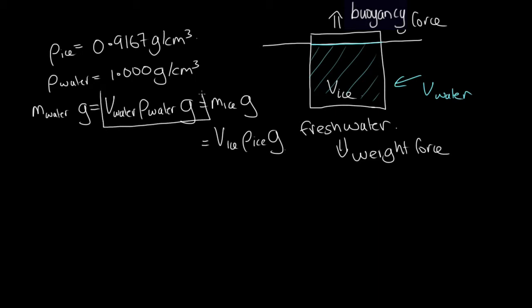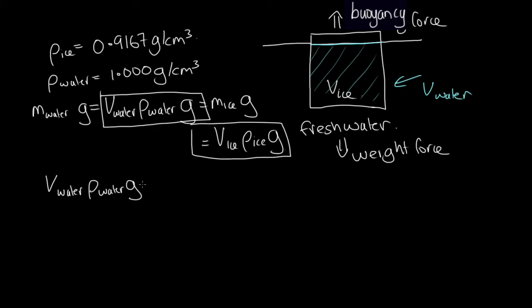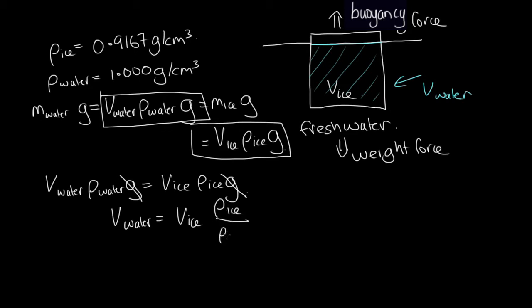So now what we want to equate is the buoyancy force and the weight force. We've got that the volume of the water times the density of the water times g is equal to the volume of the ice times the density of the ice times g, and these g's cancel out. So the volume found underwater is equal to the volume of the ice block times the density of the ice block divided by the density of water, which gives 0.9167 divided by 1.